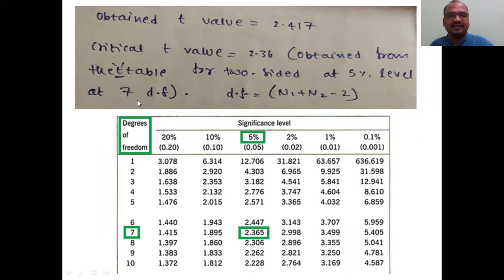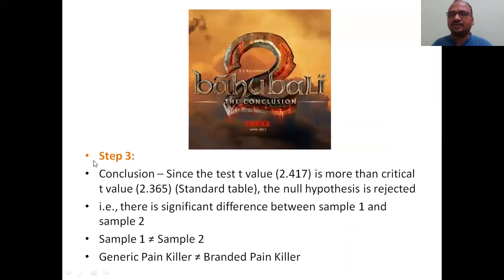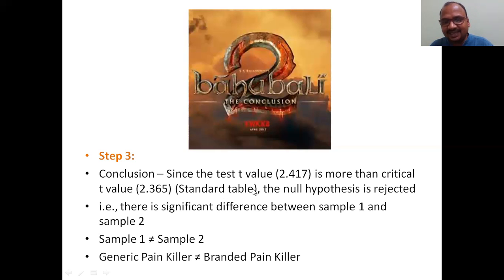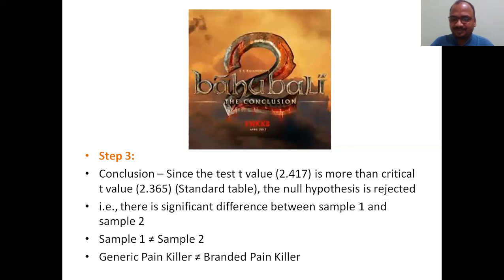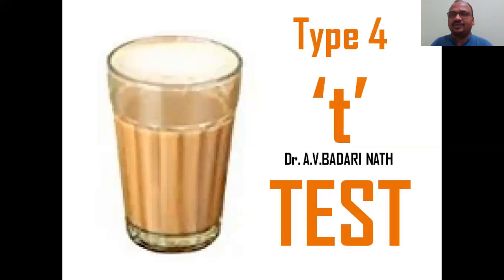Step 3 — Conclusion: since the obtained t-value 2.417 is greater than the critical t-value 2.365, the null hypothesis is rejected. This means there is a significant difference between Sample 1 and Sample 2 — i.e., generic painkiller ≠ branded painkiller. In the next video, we will see the Type 4 t-test.